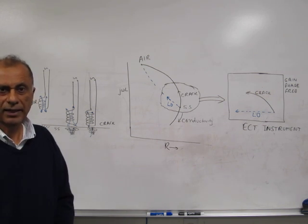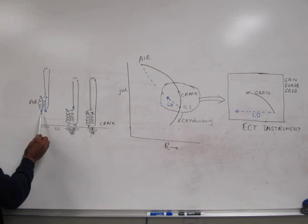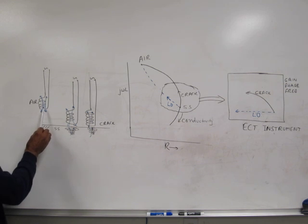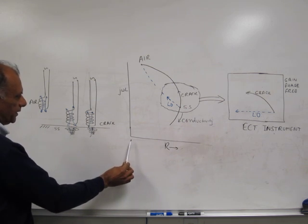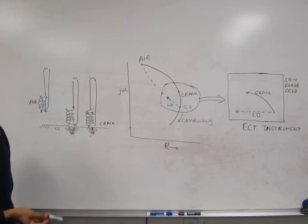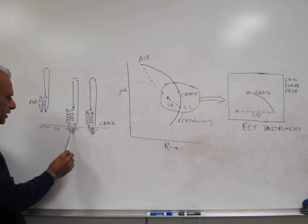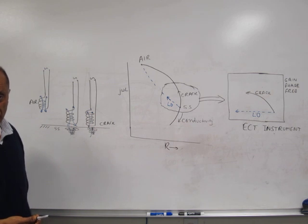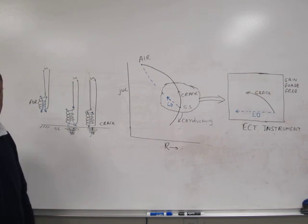The eddy current machine measures the changes in impedance of the eddy current coil. Here is an eddy current coil in air — it produces a magnetic field shown in blue color. When the coil is in air, the impedance of the coil is displayed on the impedance plane diagram at a specific point. When the coil is lowered onto the surface of a conductive material such as stainless steel, eddy currents are produced in the material, generating a magnetic field that opposes the primary magnetic field of the eddy current coil.